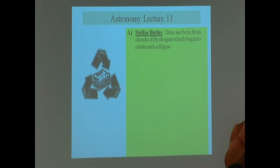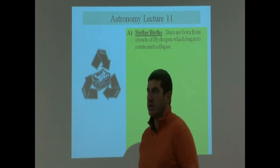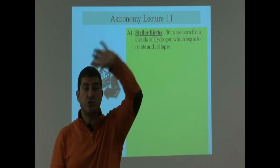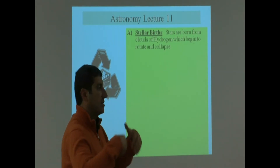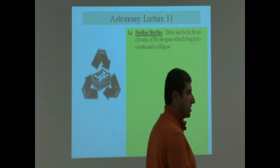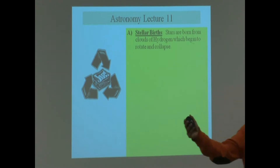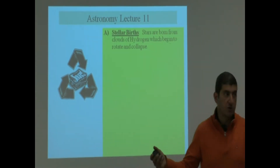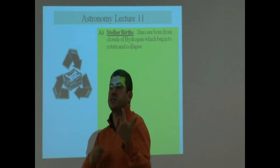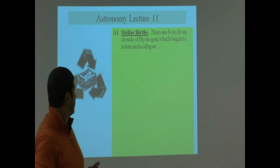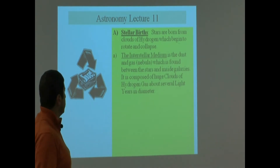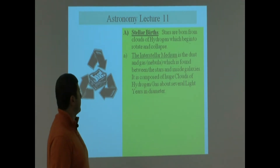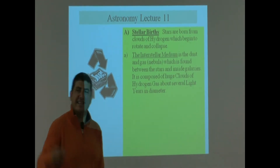These rotate and collapse — they're called star nurseries. Star nurseries exist in the interstellar medium, in the galaxies. These are what breed the birth of stars. All you need is a huge cloud of hydrogen and then something to make it collapse: gravity. Gravity makes the hydrogen collapse, starts spinning, and then starts forming a star. The interstellar medium is the dust and gas — the formal name for gas is nebula — which is found between the stars and inside of galaxies.